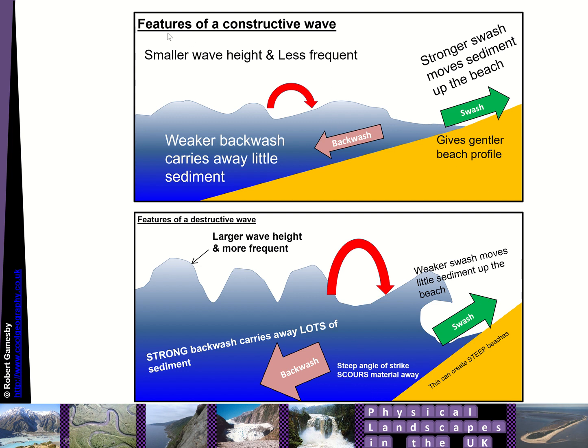In the UK, constructive waves we tend to get those during calm periods, often during the summer months. When we get our winter storms, we tend to get these destructive waves. So there can be seasonal differences in how much material is moved about on a beach and taken away from a beach.